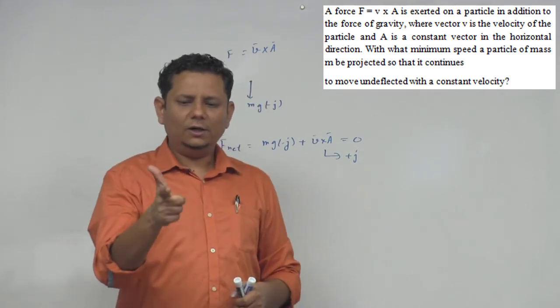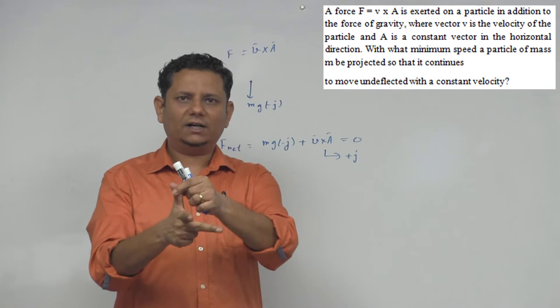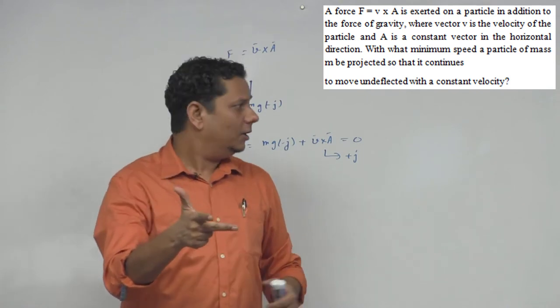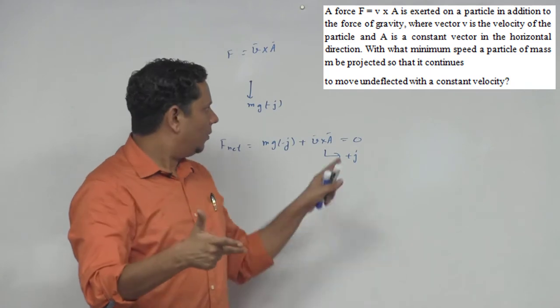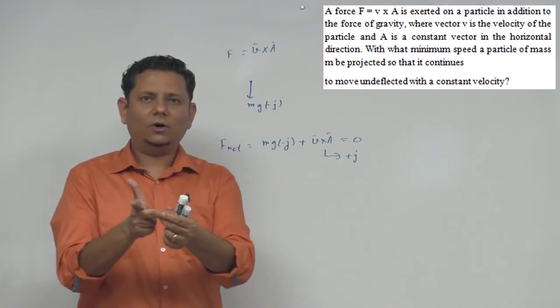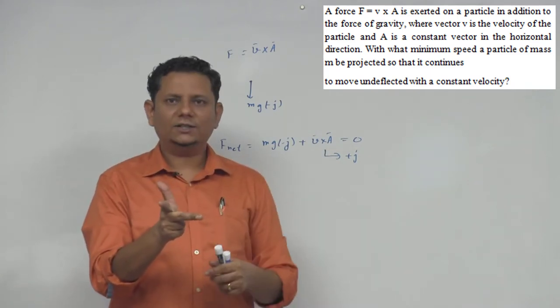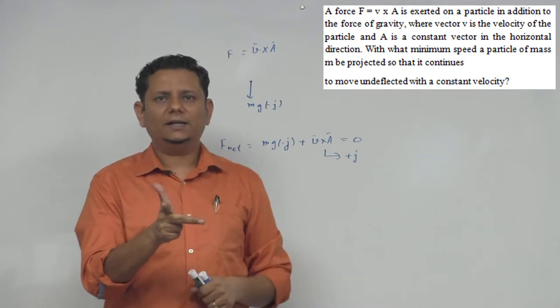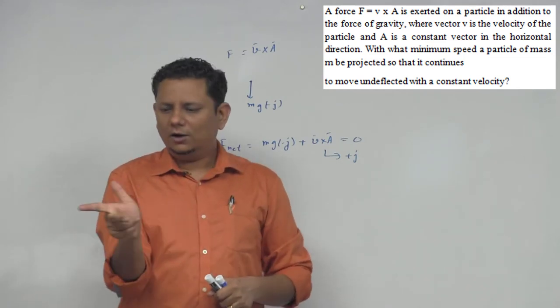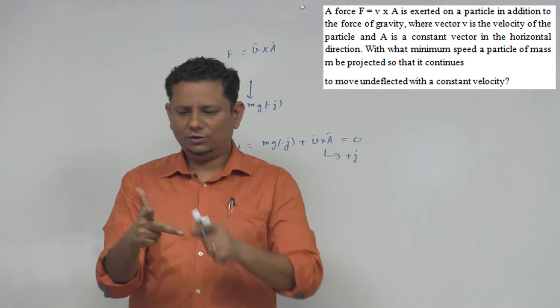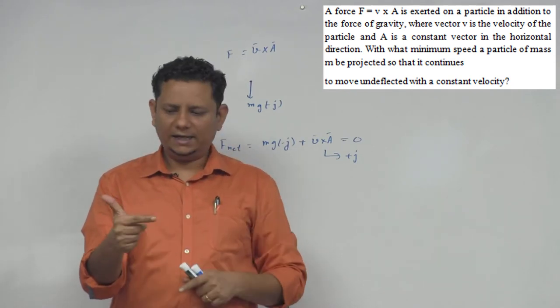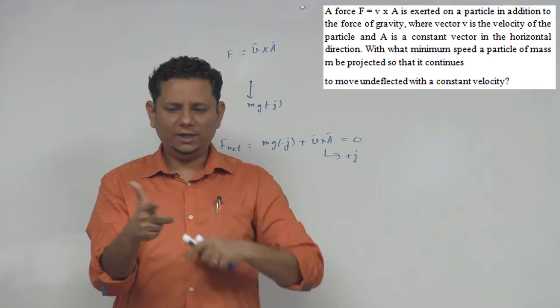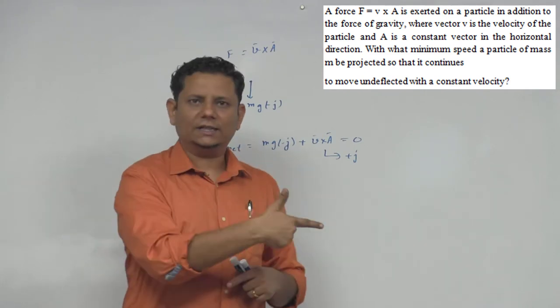If I apply the right hand rule - this is the first vector, second vector, and third vector. The third vector is J cap. This is the horizontal direction. So if I take the horizontal direction, this is V, A, and this is the final V cross A.